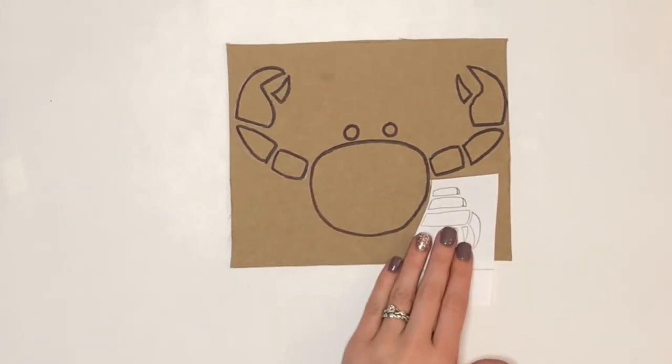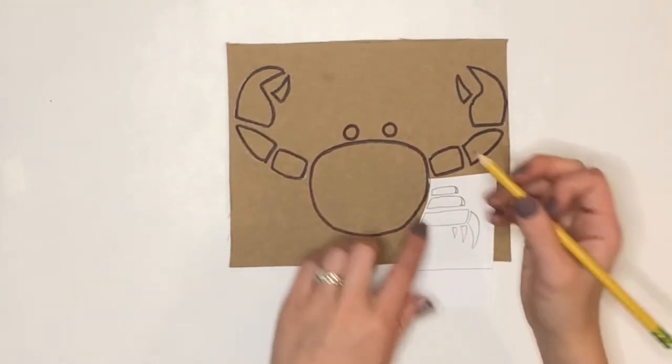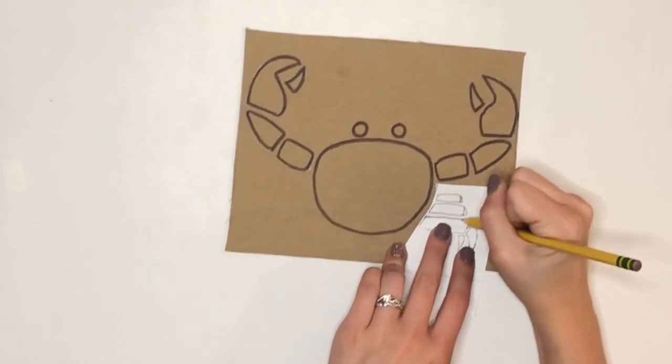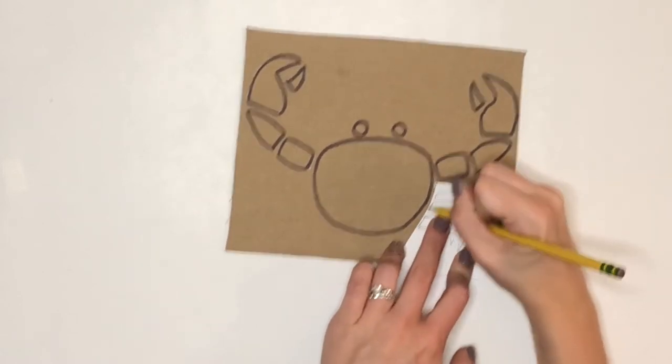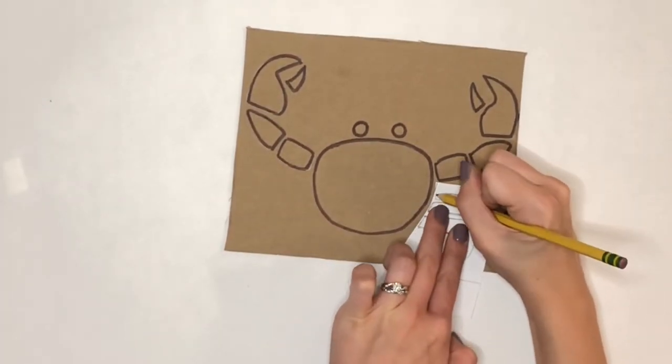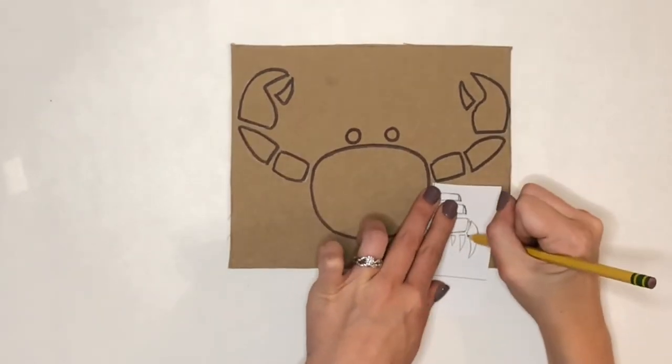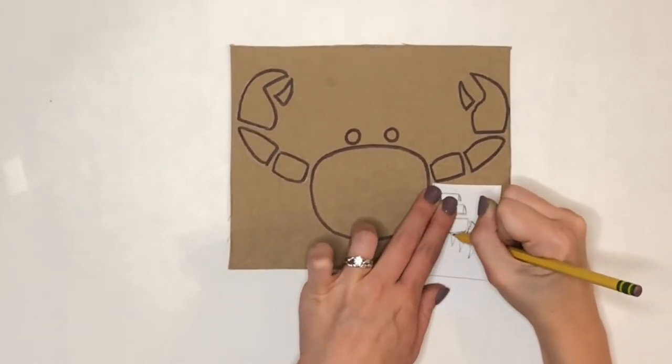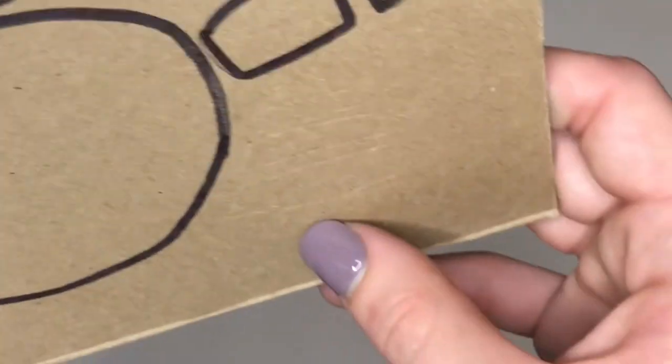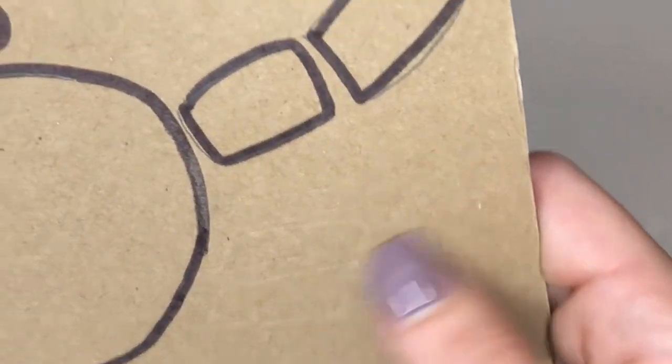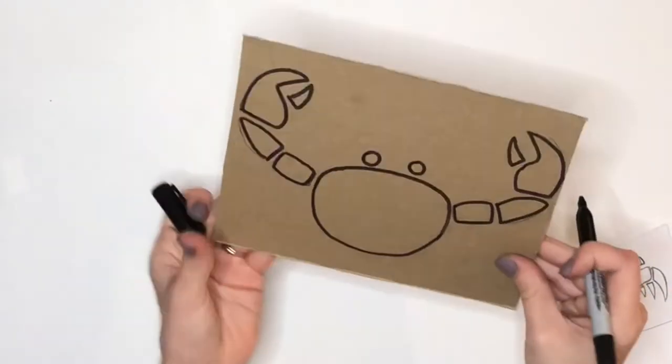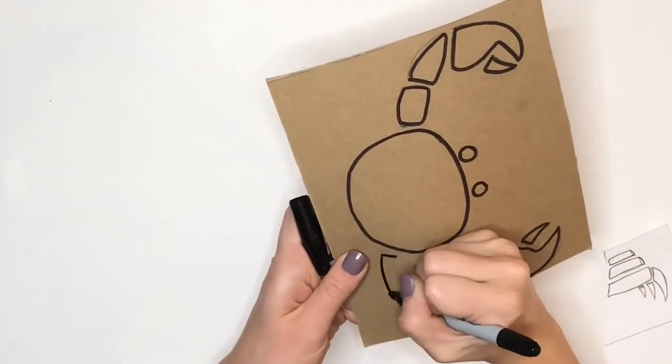For the legs of the crab I'm going to show you another way that you can transfer over your image. If you do not want to cut all of your pieces out and use them like stencils, you can always take your pencil over those lines, laying it on top of the cardboard and press down really hard to create an impression in your cardboard. So here you can see I have now made these impressions in my cardboard that I can go back over with my sharpie and trace over them so I can see them a little better.